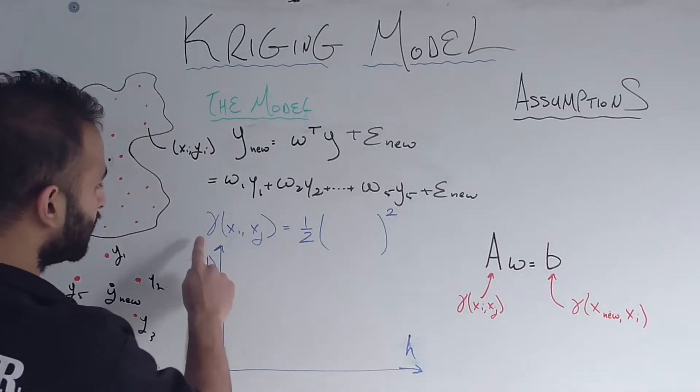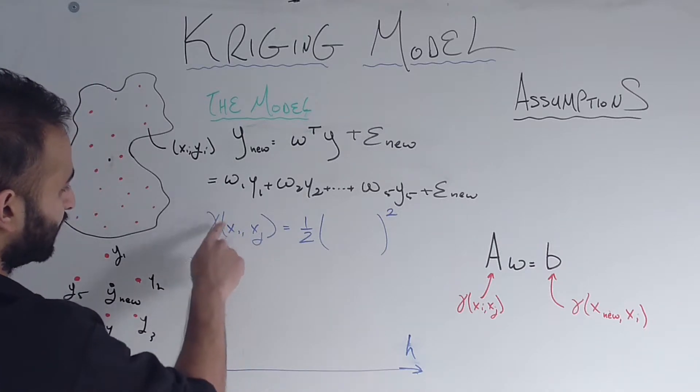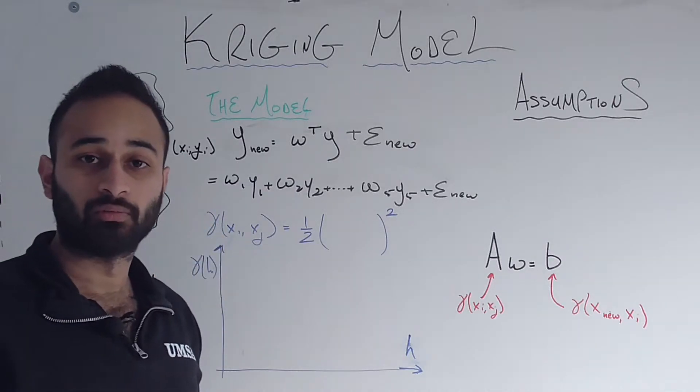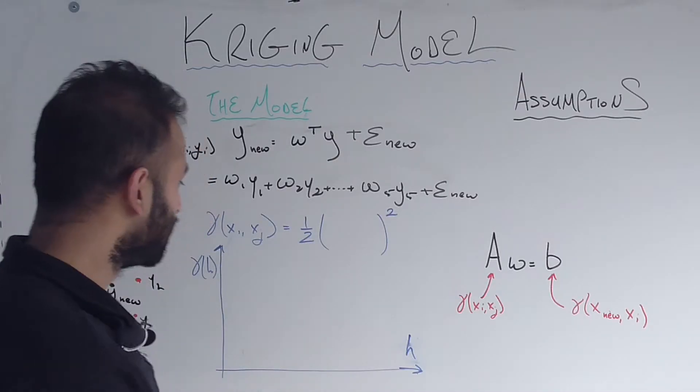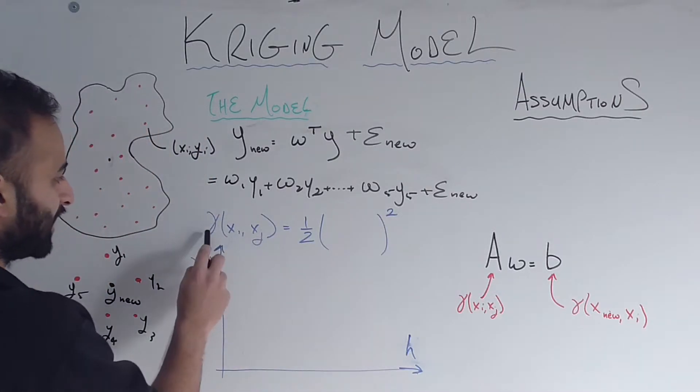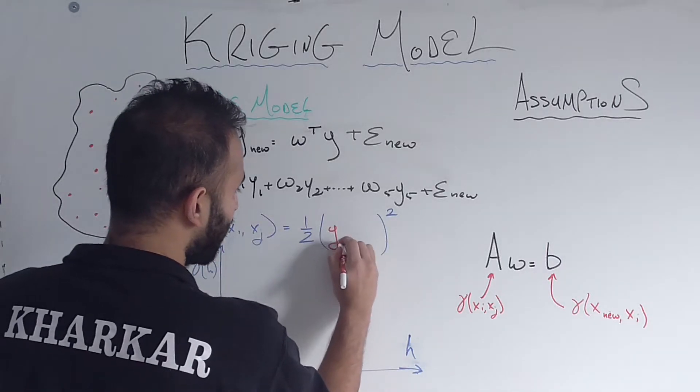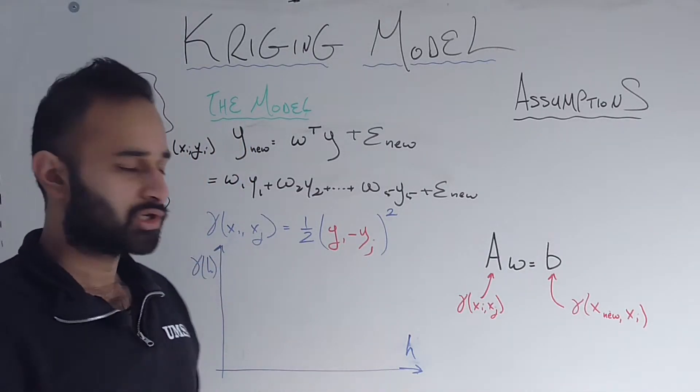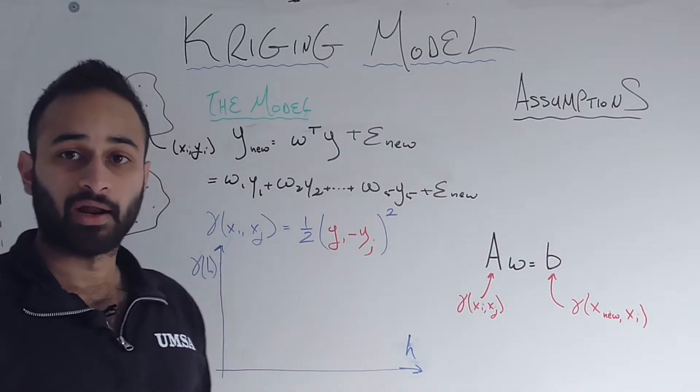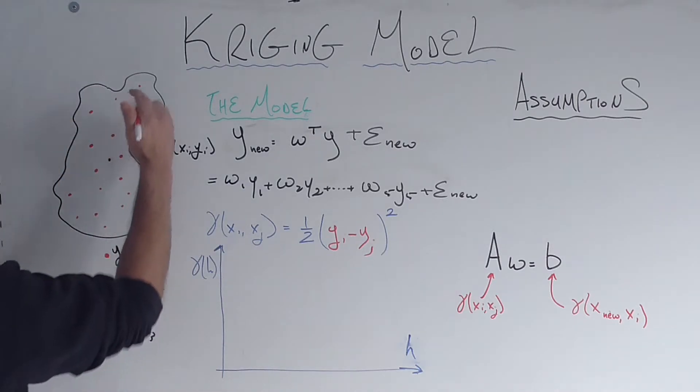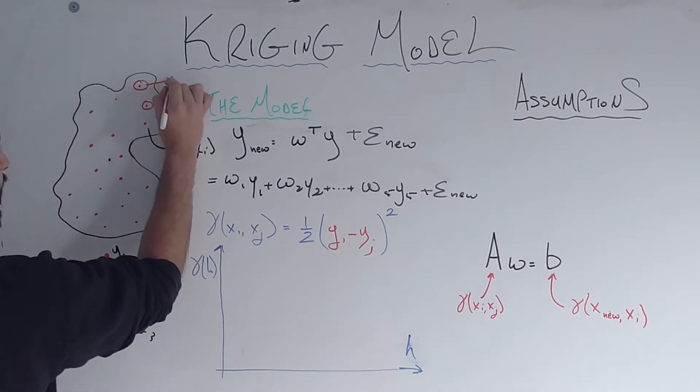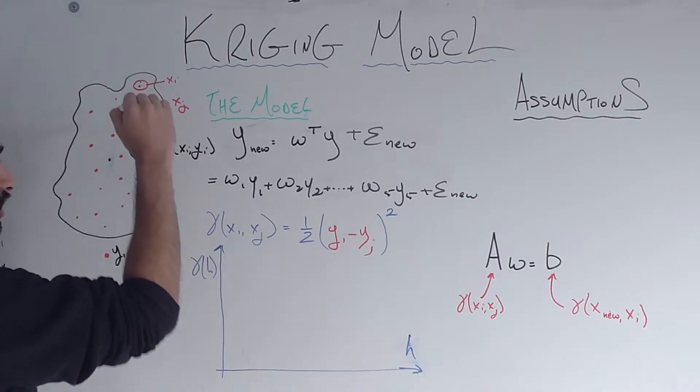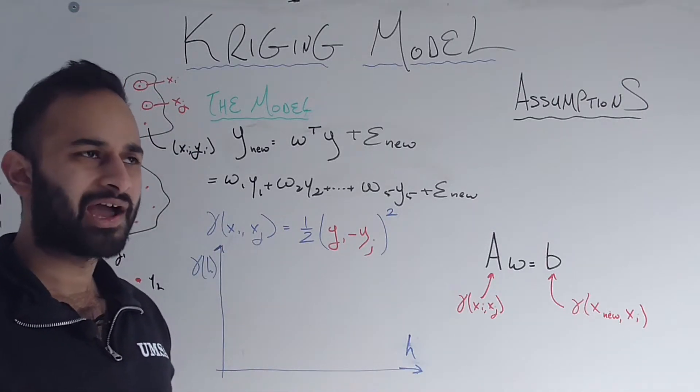So the first thing to understand the variogram is this function. And this function is basically gamma of two points xi and xj. Remember x is the literal spatial placement of that point, where it is geographically. So if I put in two points xi and xj, then gamma of xi and xj is simply given by one half yi minus yj squared, and the y's remember are the elevations. So the story that this equation is telling is basically saying that if I put in two points, any two points, let's say this guy and this guy, so this is my xi this is my xj, then the function is basically one half of the difference in elevation between those two points.